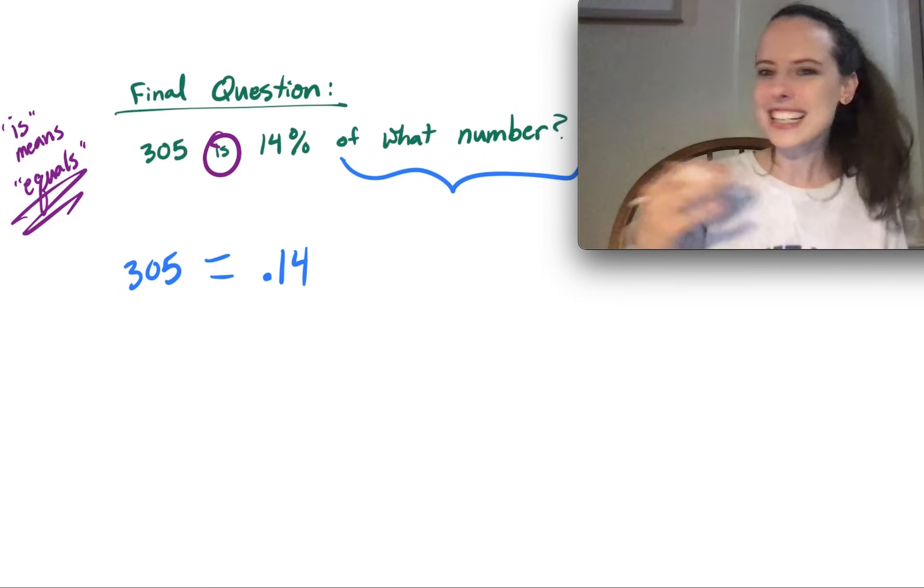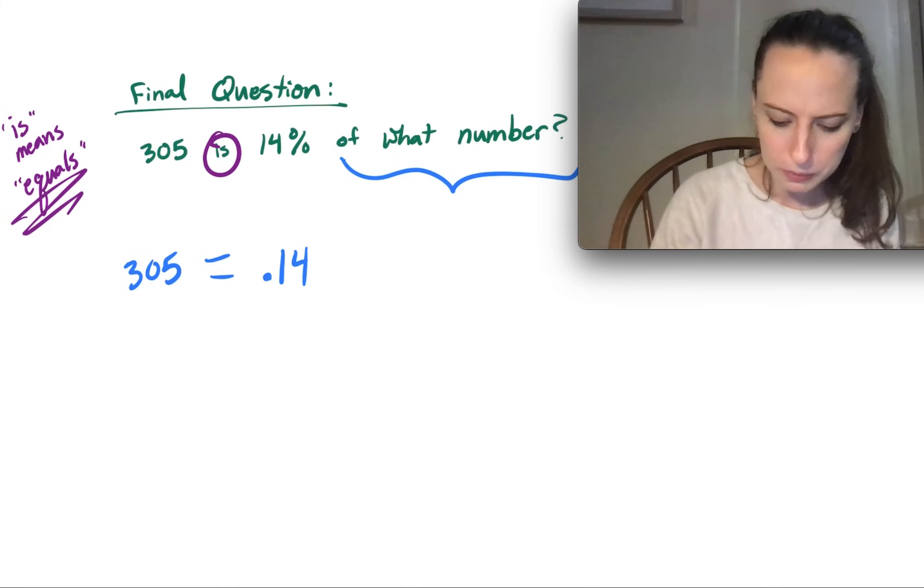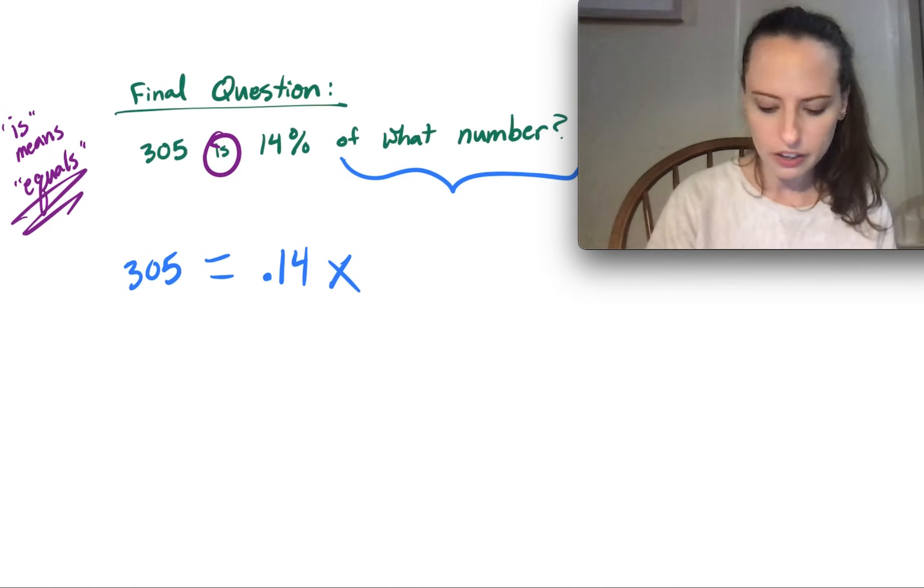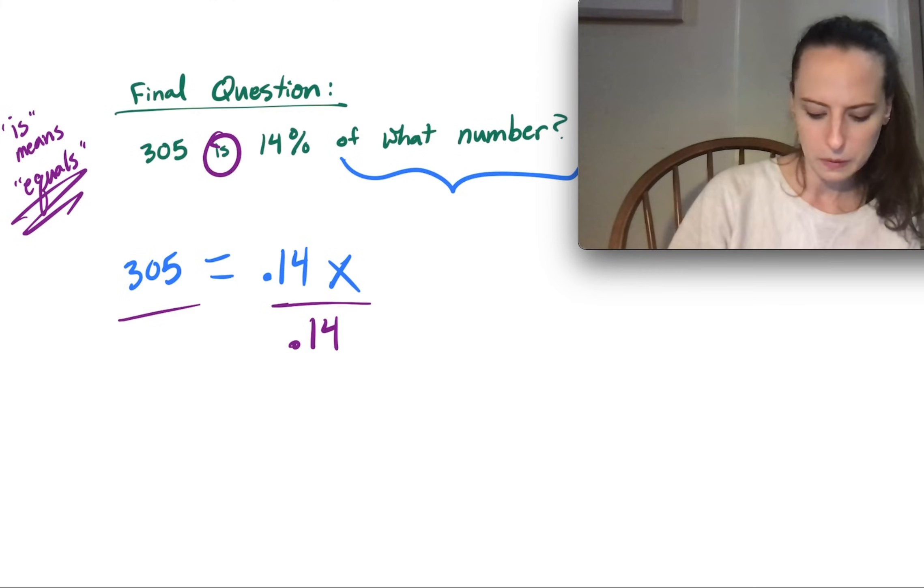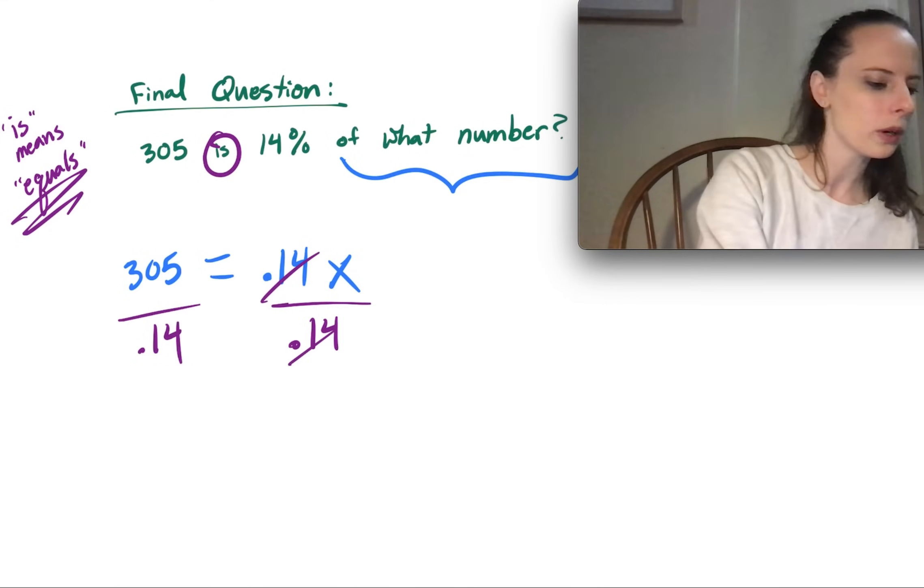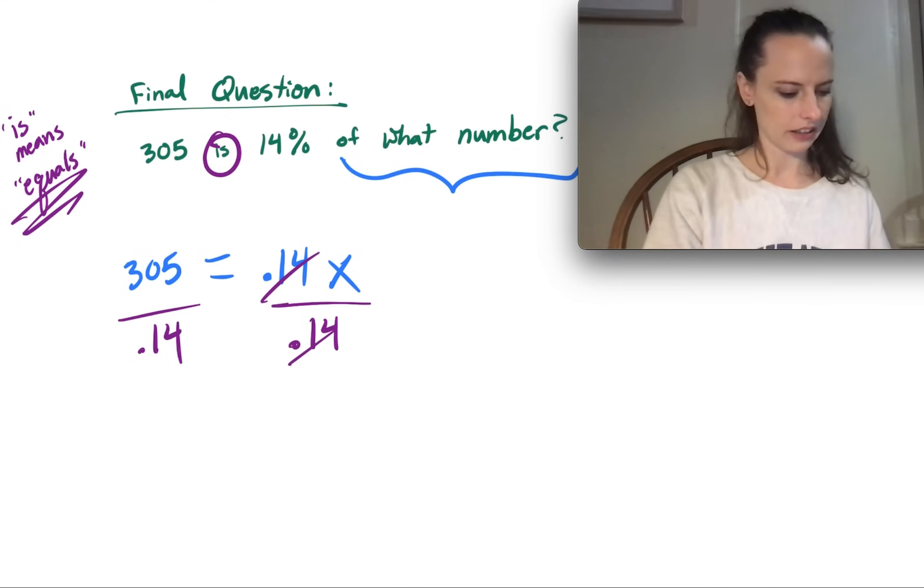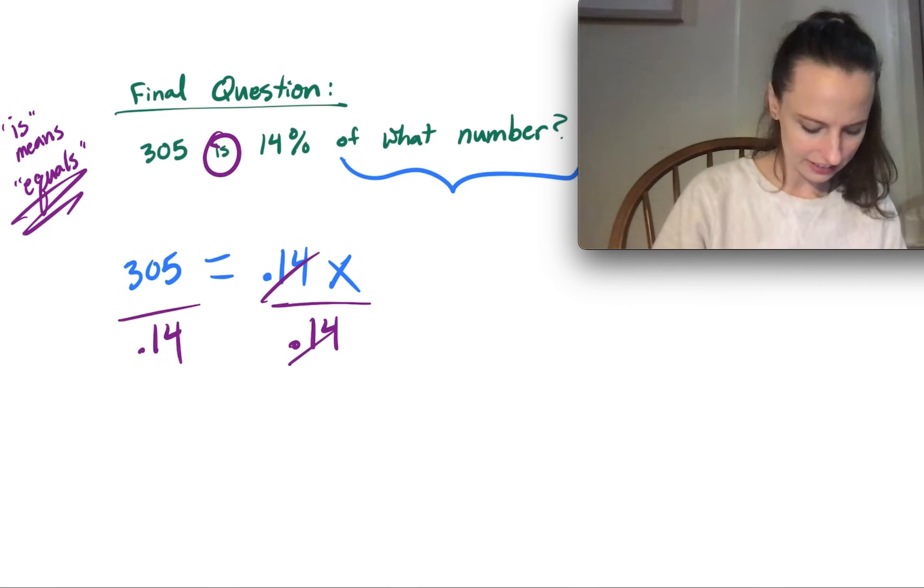Well, in math, anytime there's a number that we don't know, we can replace it with a variable, like x or really any other letter. So we can replace this whole 'of what number' with the variable x. And now we have an equation that represents this relationship where now all that we have to do to solve for x is divide both sides by that decimal .14. So when we divide 305 by .14, we end up with this answer for x of 2,178.57.